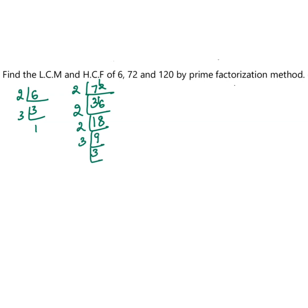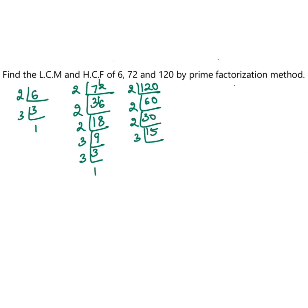For 120, the factors are found similarly: 2, then 2 again, then 2, giving us 15, then 3, then 5. So the prime factors of 120 are worked out through repeated division.